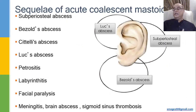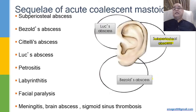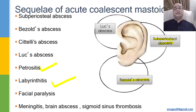The sequelae of acute coalescent mastoiditis: the most common is subperiosteal abscess. In the diagrammatic representation, the post-auricular abscess is actually the subperiosteal abscess. Luce abscess can be in the meatus. Bezold's abscess is along the sternocleidomastoid muscle. Citelli's abscess is along the posterior belly of the digastric. Medially, it can extend and lead to petrositis or labyrinthitis. Facial paralysis and intracranial complications can also occur with otitis media, and these will be discussed one by one in subsequent sessions.